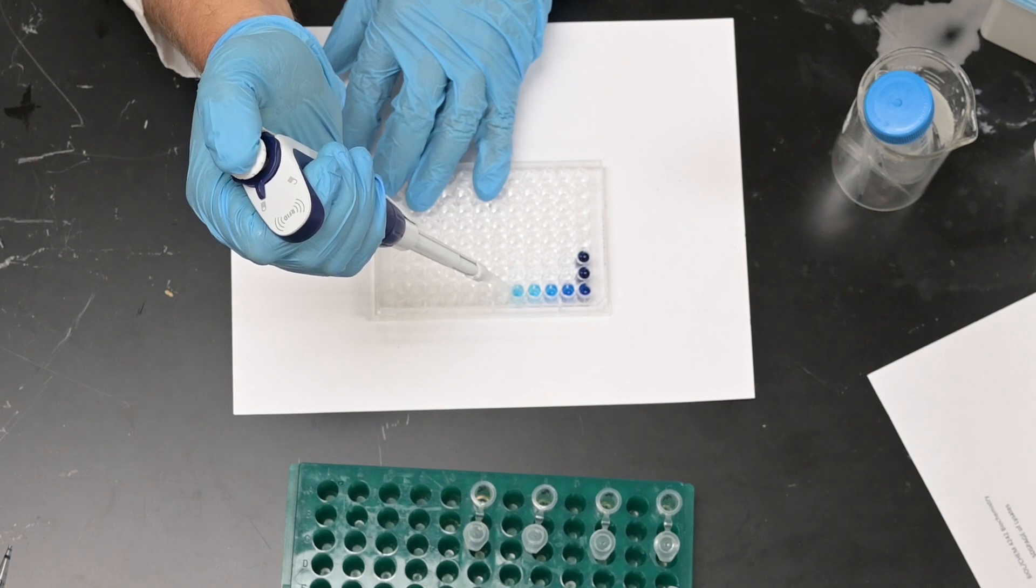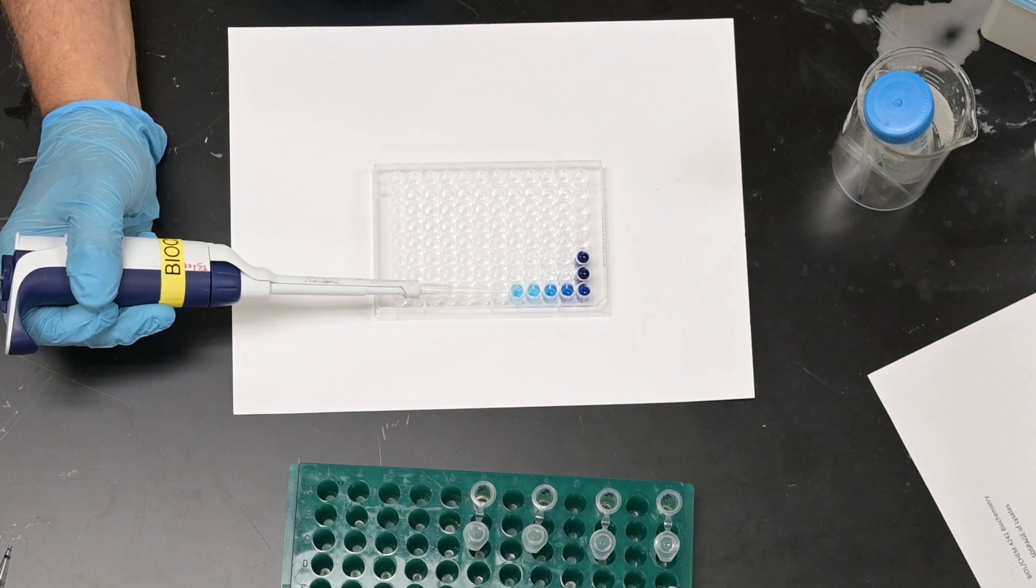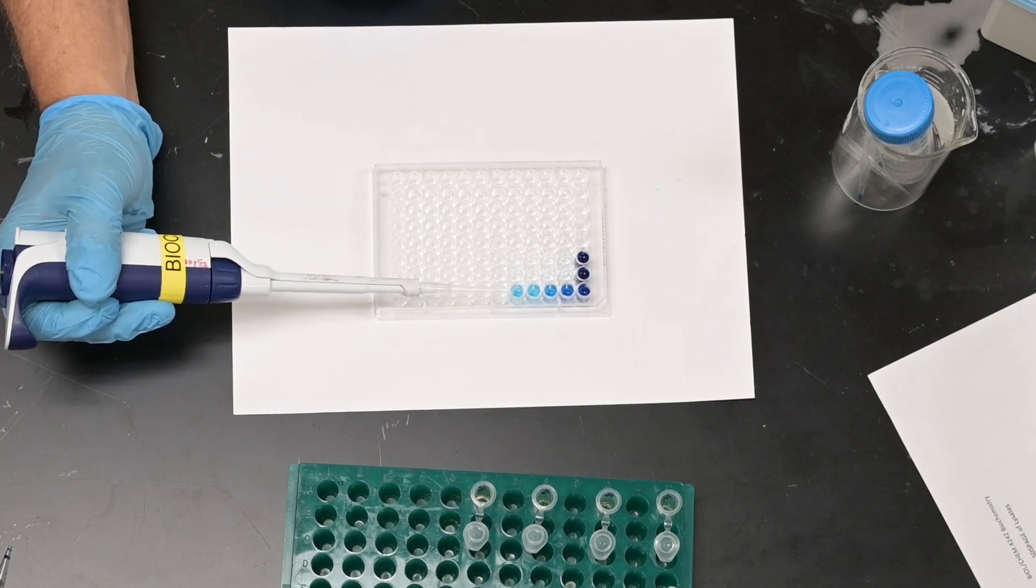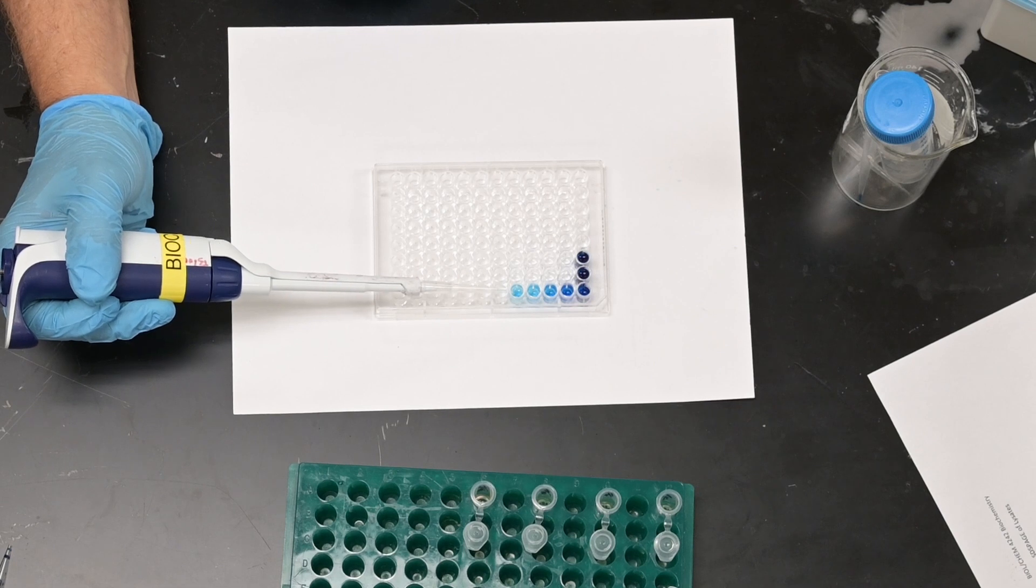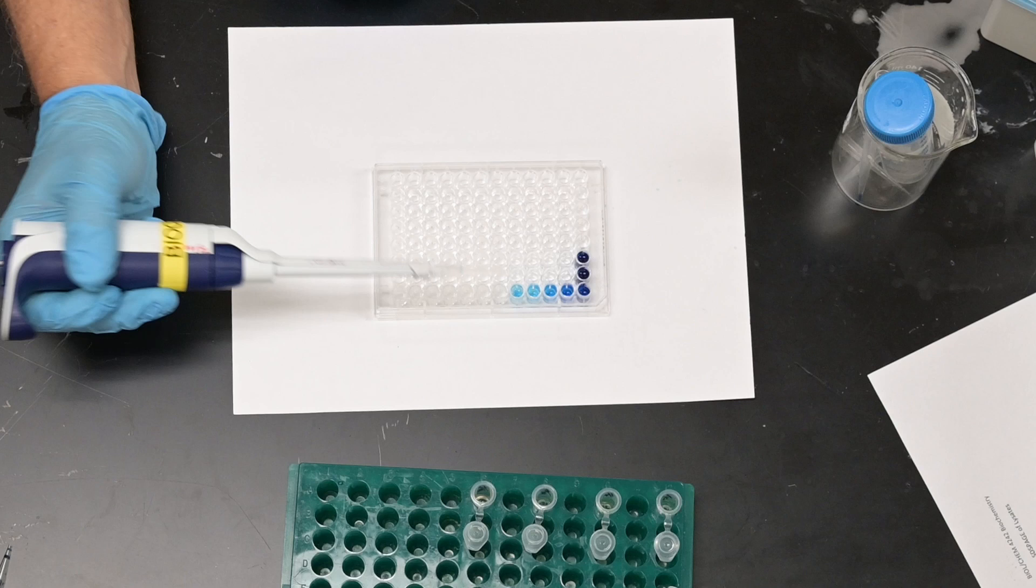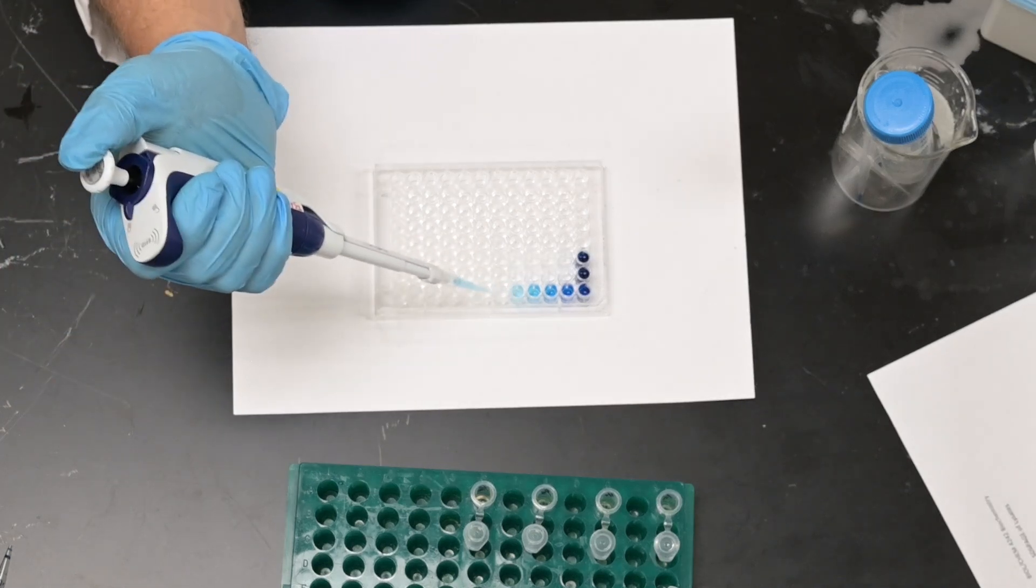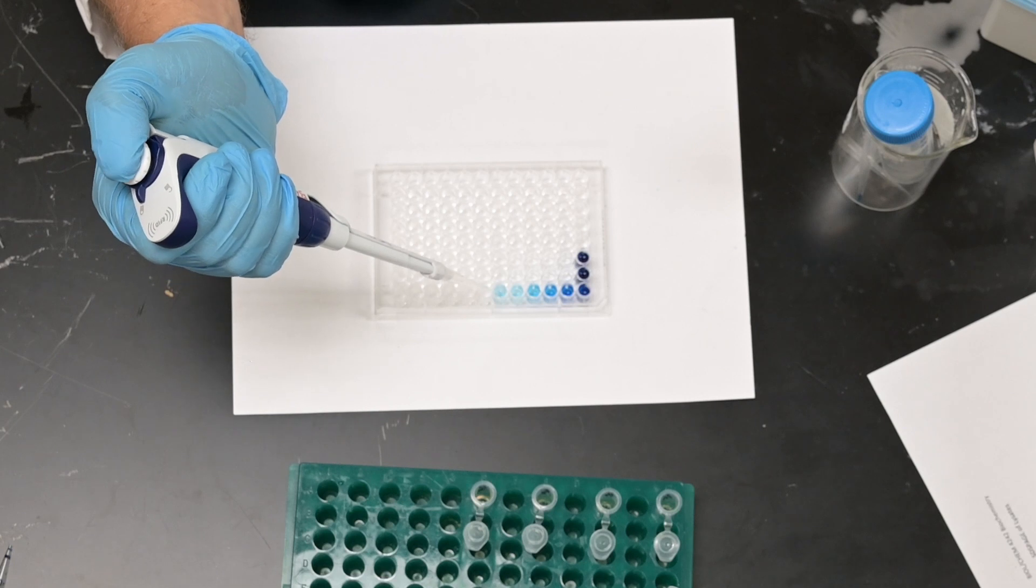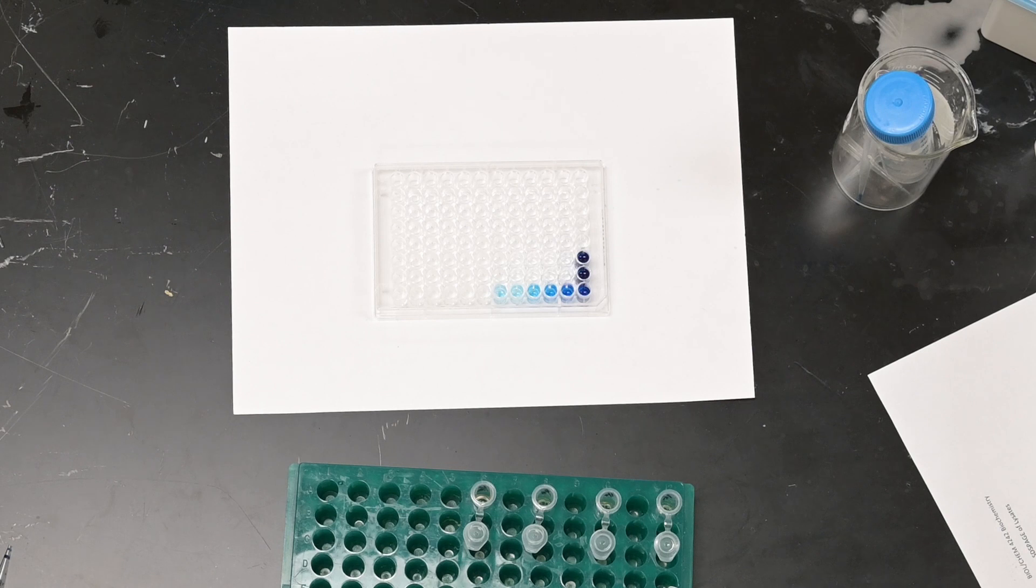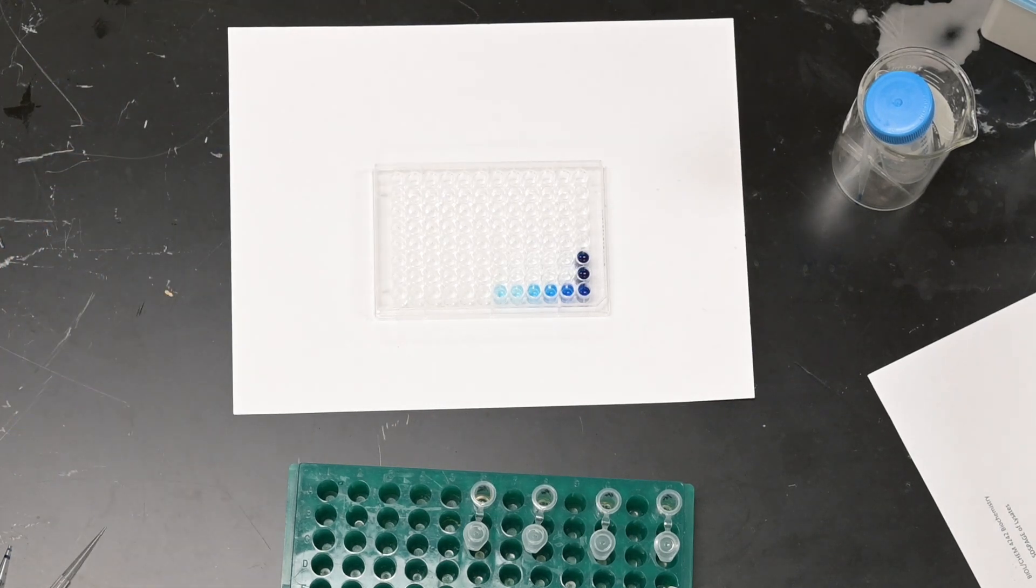Now if you remember Beer's Law from prior chemistry classes, you realize the path length needs to be the same, needs to be a fixed distance. This last sample on the plate here is twice as high as the one in the previous lane. So what I'm going to do is take 150 microliters out of that well and place it in the well next to it. We probably will not be getting absorbance readings on this well. So now we've done that, I'm going to go through and do the same series of steps to B.